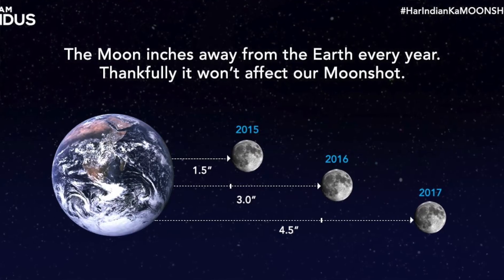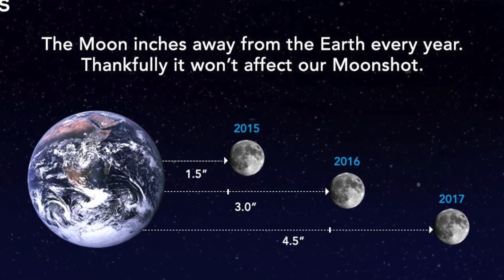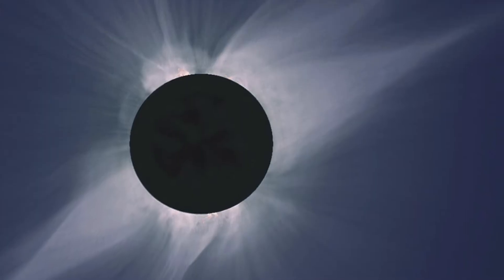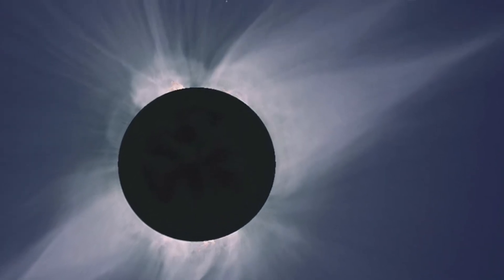Because the Earth is slowing down its spinning, it is losing angular momentum. In order to keep the angular momentum of the Earth-Moon system constant, the Moon is moving away from the Earth. So enjoy, while you can, the total solar eclipses you have ahead of you, because in some billion years there will be no more total eclipses of the Sun.